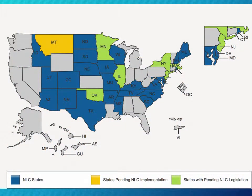Multi-state licensure, or the Nurse Licensure Compact, was developed by the National Council of State Boards of Nursing. This allows nurses in compact states to work in other compact states without obtaining a license in that state. The nurse licensed in one compact state and practicing in another must adhere to the laws of that compact state and stay abreast of any changes to multi-state licensure. States shown in blue are part of the Nurse Licensure Compact, those in green have pending legislation, and those in yellow are pending implementation.